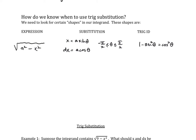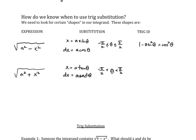Corresponding to the second trig identity, the general shape is the square root of a squared plus x squared. When we have this, our substitution is x equals a tangent theta, and dx equals a secant squared theta d theta. We need to restrict the domain for one-to-one — note it must be strictly less than, not less than or equal to, since there are asymptotes at negative pi over 2 and pi over 2. The relevant identity is one plus tangent squared theta equals secant squared theta.